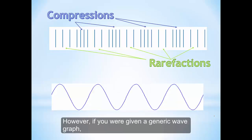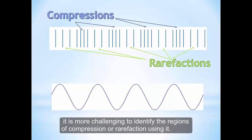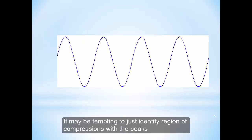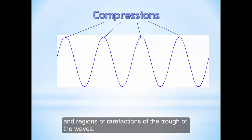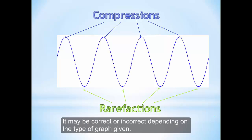However, if you are given a generic wave graph, it is more challenging to identify the regions of compression and rarefaction using it. It may be tempting to just identify regions of compression with the peaks and region of rarefaction at the trough of the wave. It may be correct or incorrect, depending on the graph given.